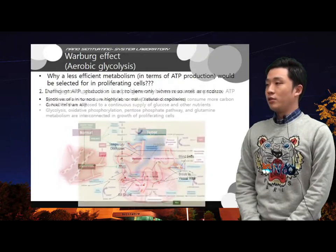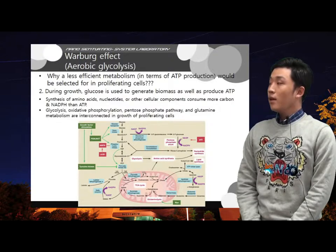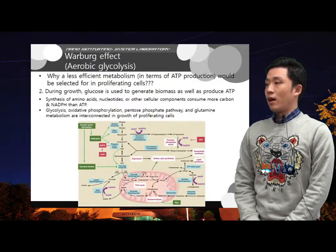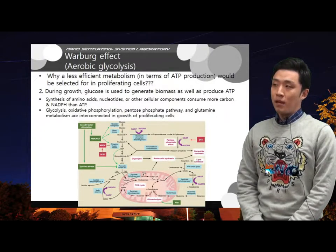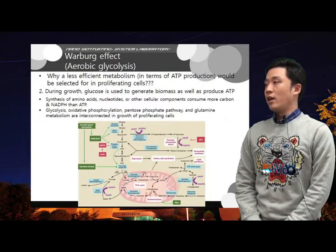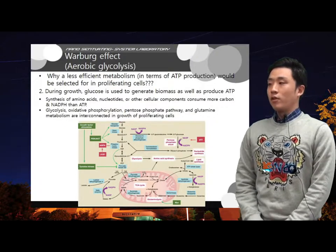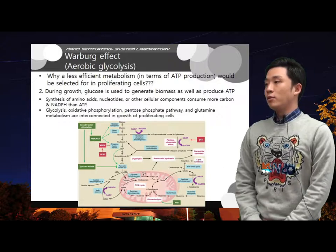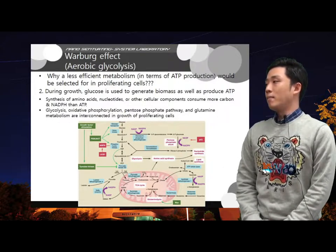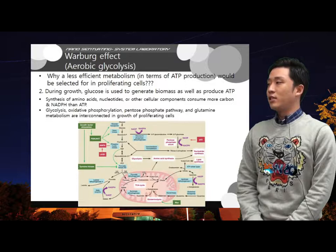Another reason is that during growth, glucose is used to generate biomass as well as ATP. During the synthesis of amino acids, nucleotides, or other cellular components, not only ATP but also carbon and NADPH are consumed. Therefore, glycolysis, oxidative phosphorylation, the pentose phosphate pathway, and glutamine metabolism are all interconnected in the synthesis of biomass.